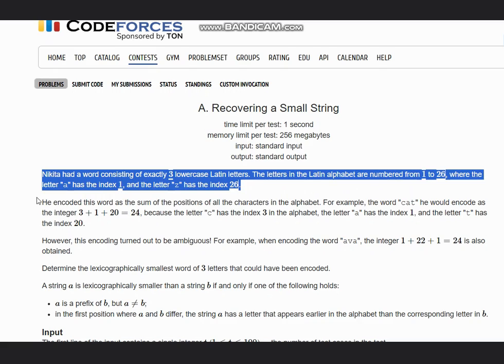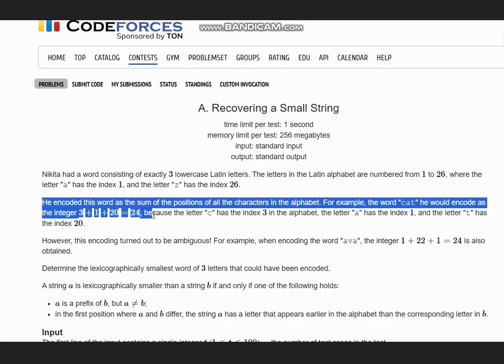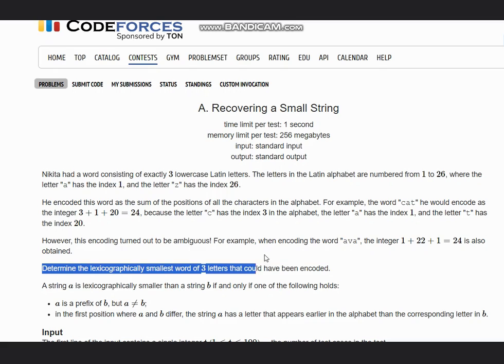He encoded this word as the sum of the positions of all the characters in the alphabet. For example, the word 'cat' he would encode as integer 24, which is C at index 3, A at index 1, and T at index 20, so it sums up to 24. However, this encoding turned out to be ambiguous. For example, when encoding the word 'ava', the integer 24 is also obtained.